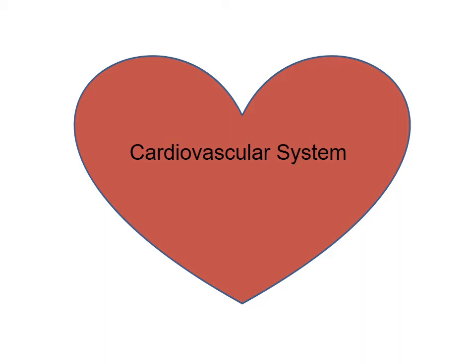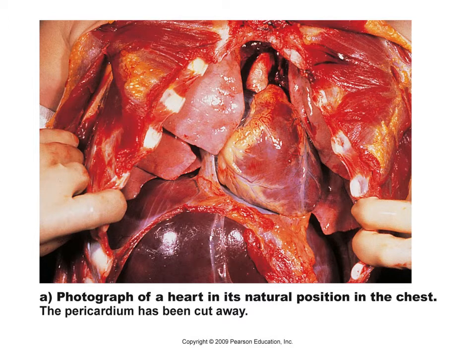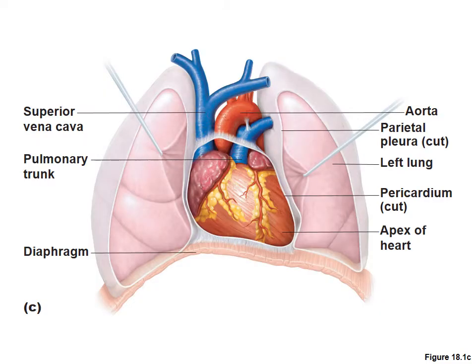This is showing you a photograph of a heart in its natural position in the chest. You can see that the heart is kind of in the center here. You can actually see a couple of the blood vessels wrapping around it. You can notice that it's behind the ribs, between the lungs, above the digestive tract. The pericardium is the covering around the heart that's been cut away so that the heart itself is able to be exposed.